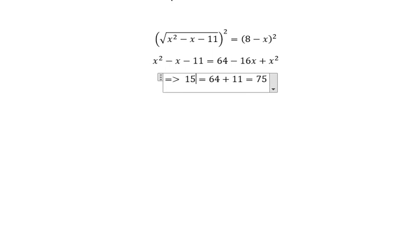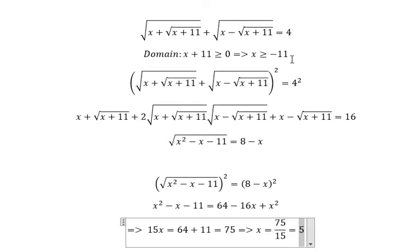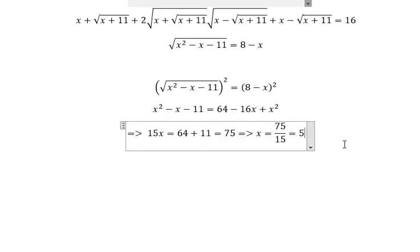You will get about 15x, so we can get the final answer: 75 divided by 15, you got about 5. And we check the number 5 with the domain, and we can accept.